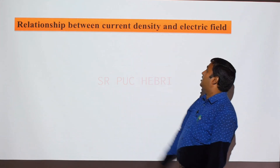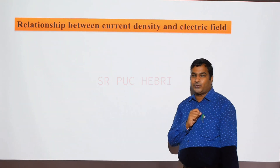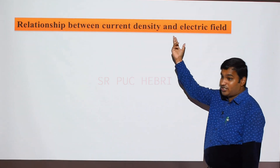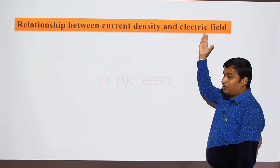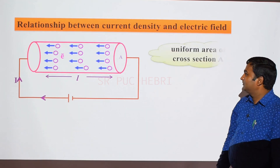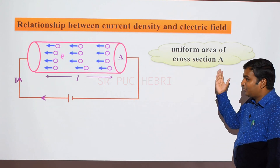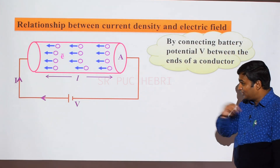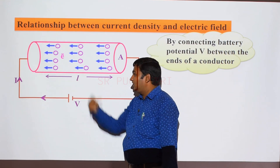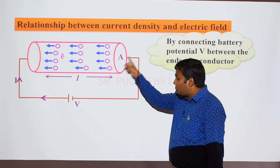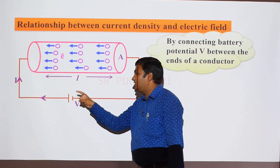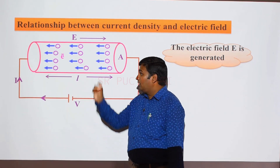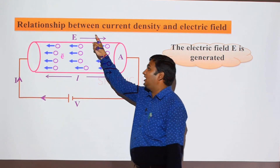Now let us discuss the relationship between current density and electric field — an important exam question worth 3 or 5 marks. Consider a conductor of length L with uniform area of cross section A, connected to a battery of potential V. The electric field is generated across the conductor when the battery is connected.